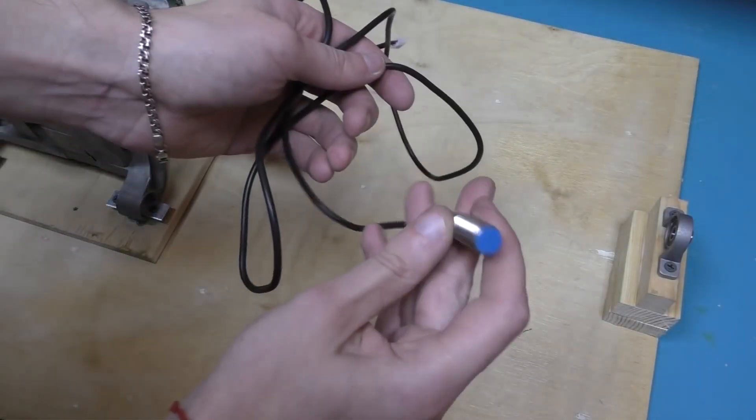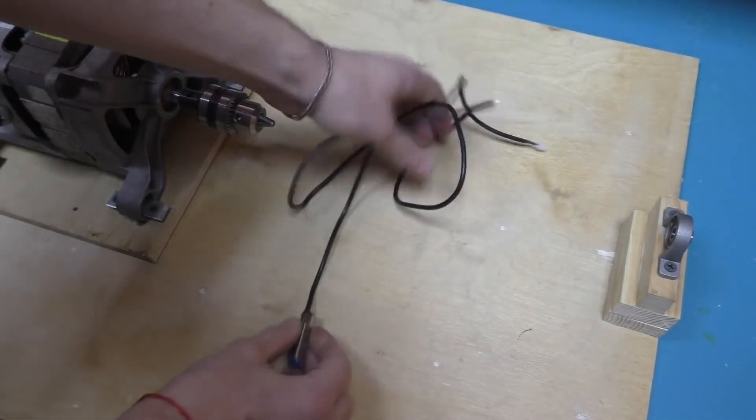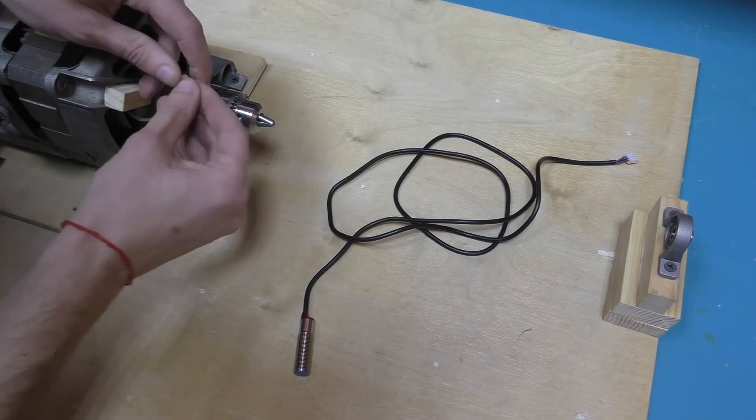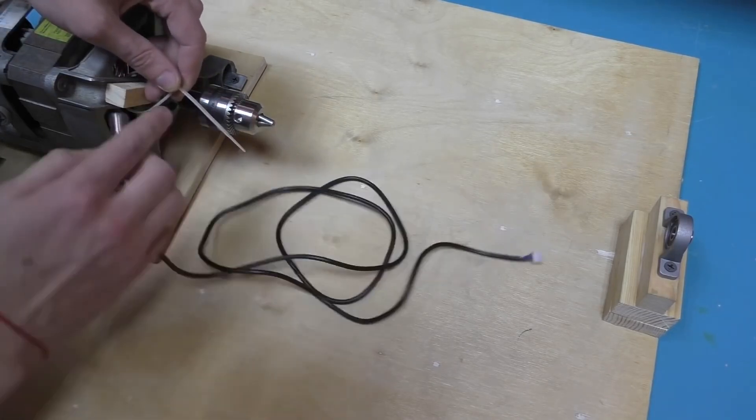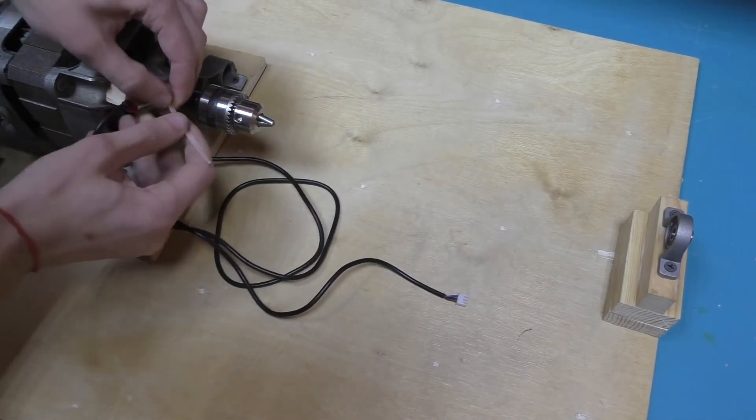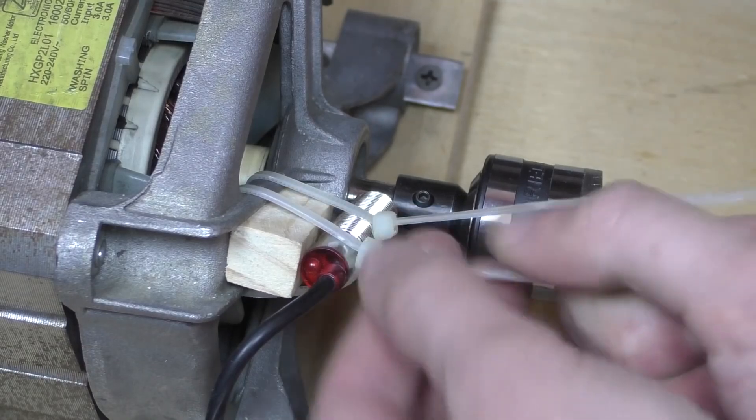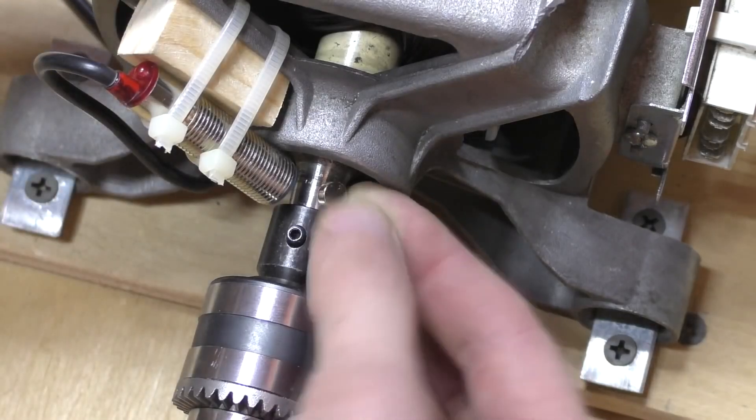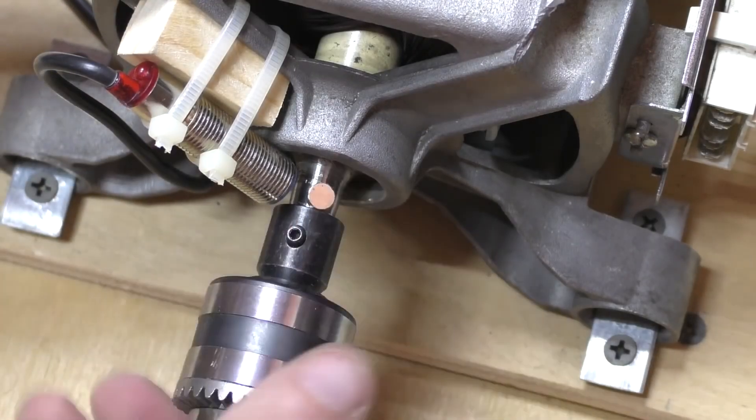In order for us to see at what revolutions per minute the motor is operating, we'll attach a special sensor to it. Now, attach a magnet to the shaft positioned opposite the sensor.